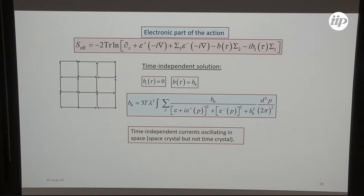One gets time-independent equations. If one assumes it is time-independent, one gets this equation and one can find this solution corresponding to loop currents. Then the question is: is that always the ground state? Is that always the lowest energy?